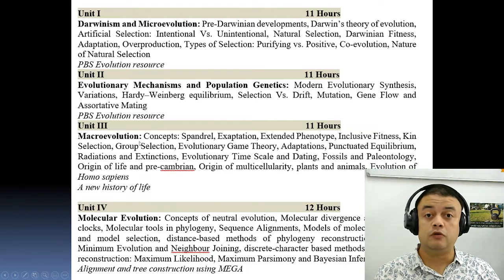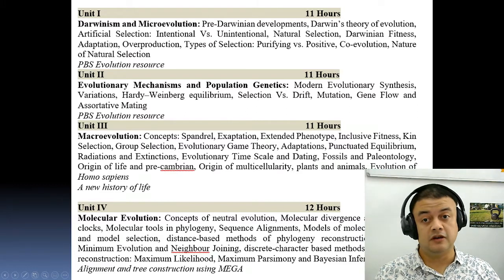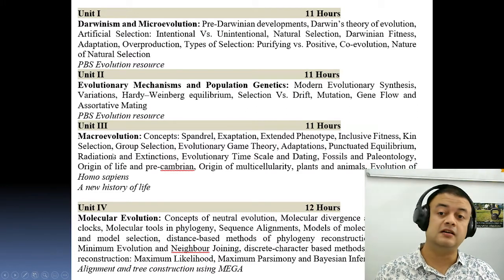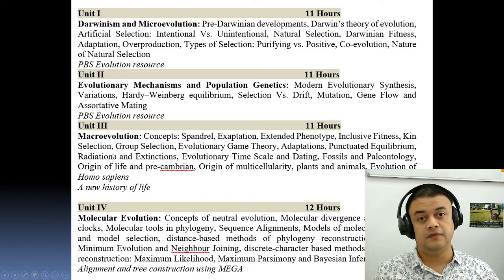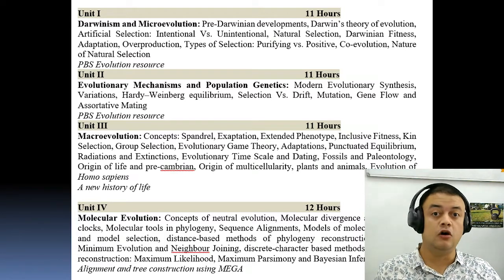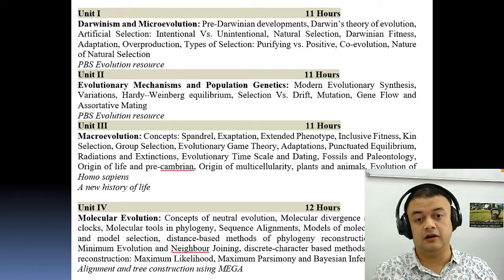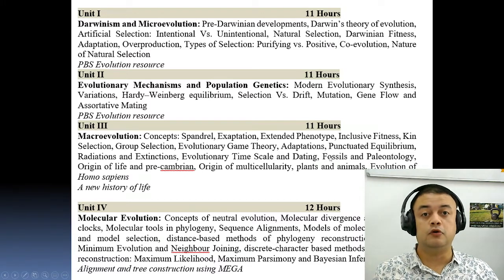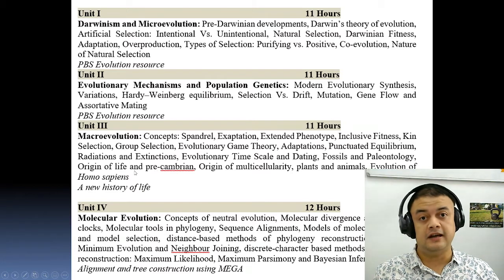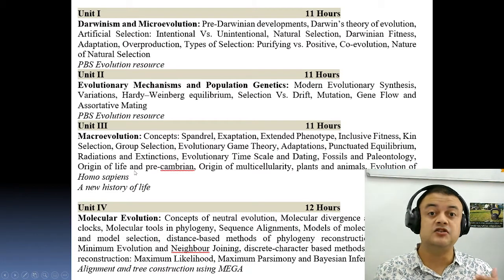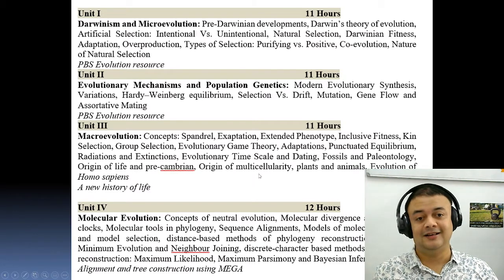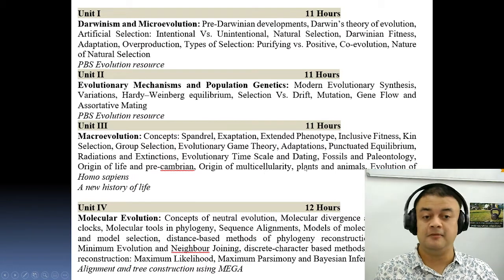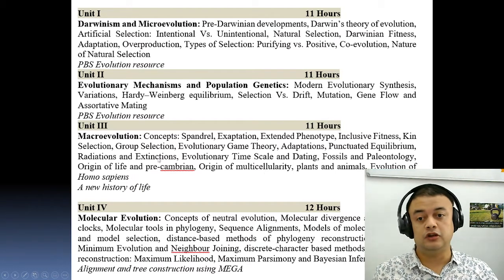The third unit is about macroevolution — at or beyond the population level. We will cover spandrels and other concepts, fossils and paleontology, the origin of life, and the history of life on planet Earth, including the evolution of multicellularity, plants, animals, and all those things, up to human evolution.